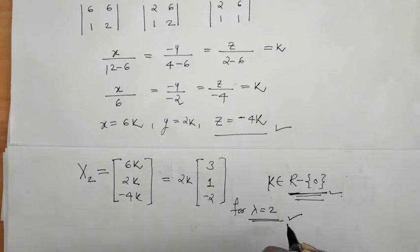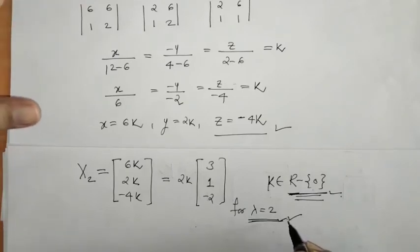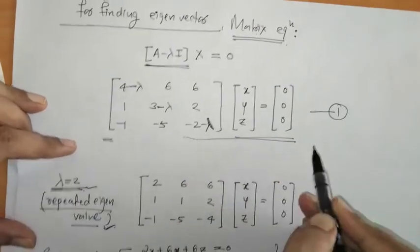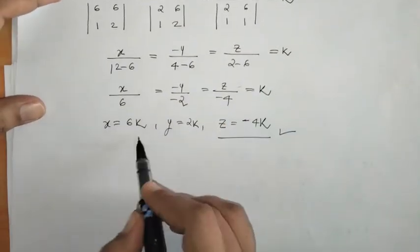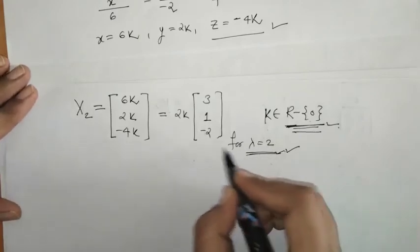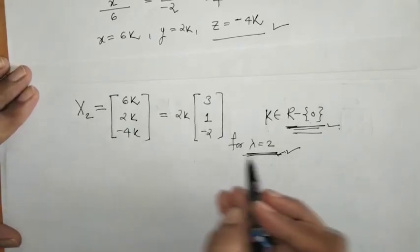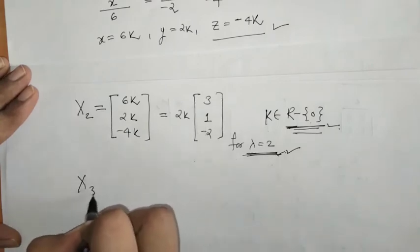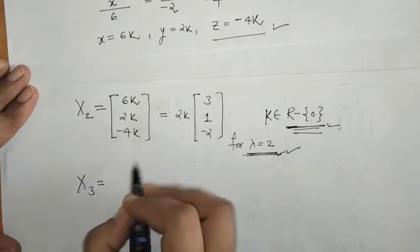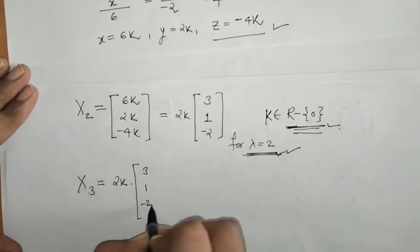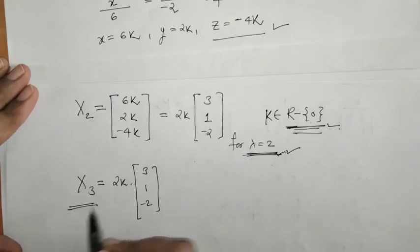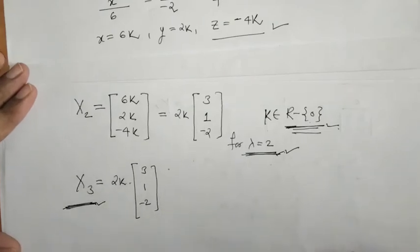Putting λ = 2 again in the matrix equation gives the same system of equations, and solving again yields the same eigenvector X3 as 2k times [3, 1, −2]. To check independence, we put k = 1/2 for X2, getting [3, 1, −2], and k = −1/2 for X3, getting [−3, −1, 2]. Checking these two eigenvectors, they are multiples of each other, so they are not independent eigenvectors.